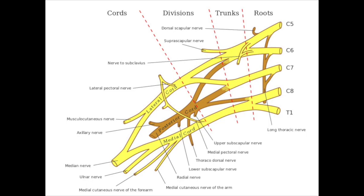Keep in mind this is a very important part when you are handling clinical cases. The roots of the brachial plexus are between the scalene muscles and the trunks are in the posterior triangle. The divisions are behind the clavicle and the cords are arranged around the second part of the axillary artery.